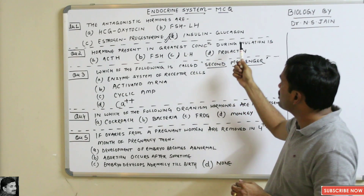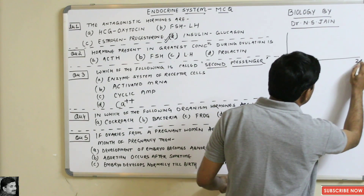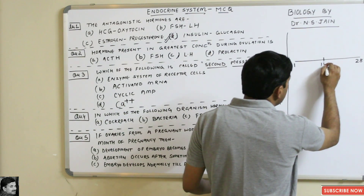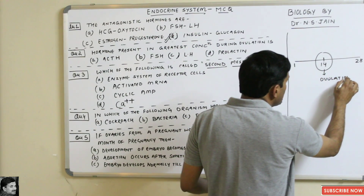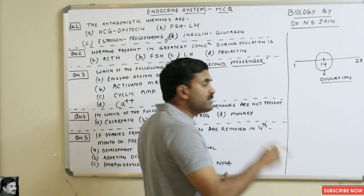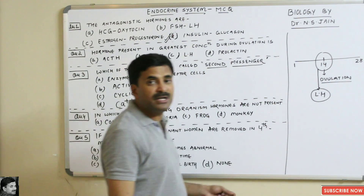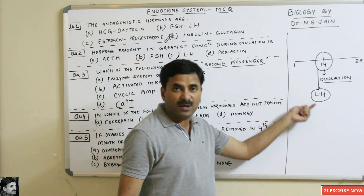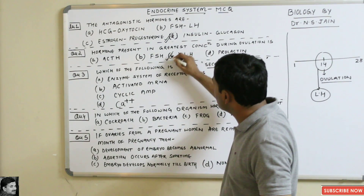Question number two: which hormone is present in greatest concentration during ovulation? The menstrual cycle is 28 days in primate females. On the 14th day — the midpoint — ovulation occurs under the influence of LH, the luteinizing hormone, which is secreted in high quantities by the anterior lobe of the pituitary gland.